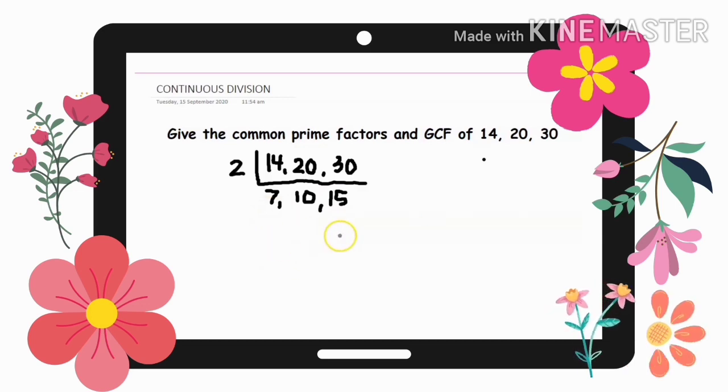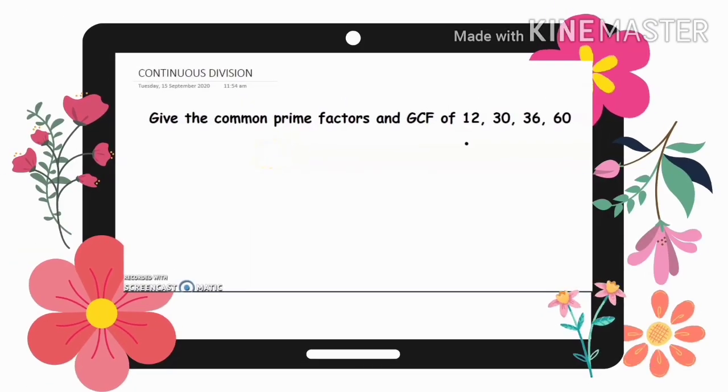Therefore, ang common prime factors ng 14, 20, and 30 is 2. So, sabihin natin yung common prime factors nila ay 2. And the GCF is 2. That's it.